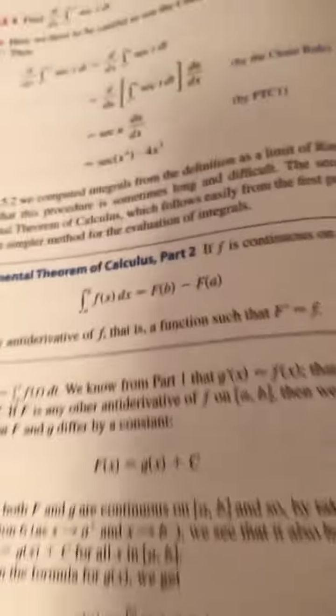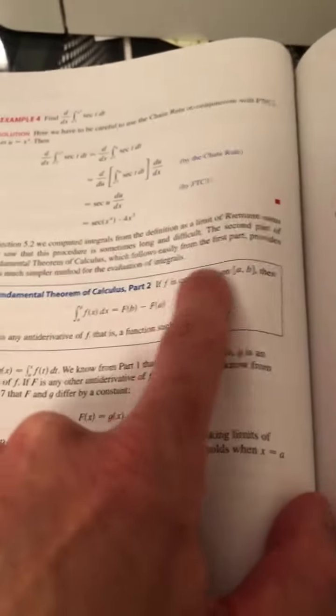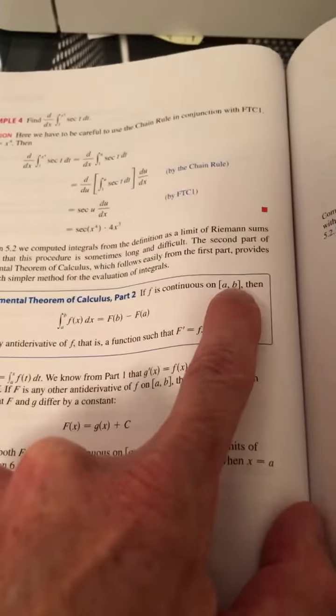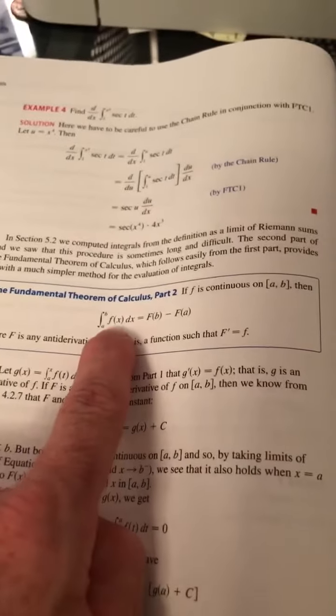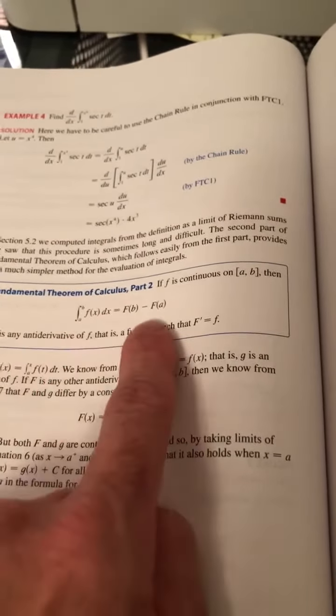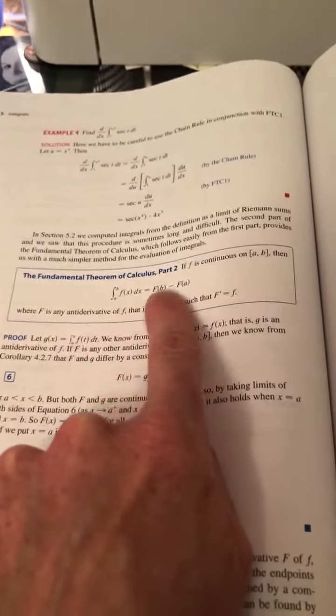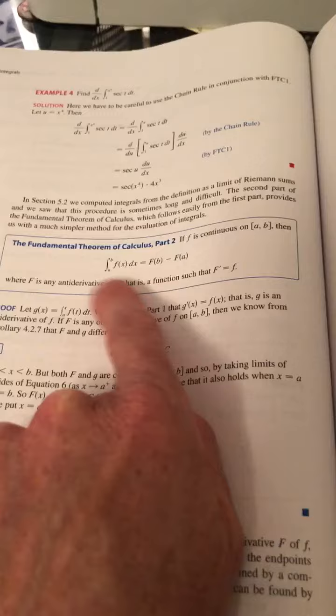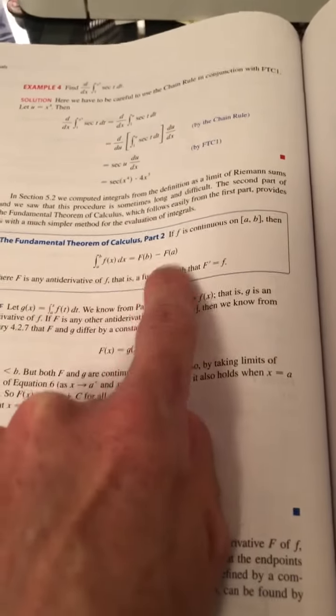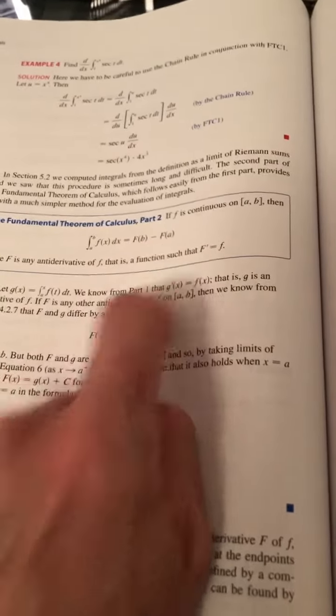If this is in your book, it's on page 396. If f is continuous on the interval from a to b, then the integral of f of x from a to b is an antiderivative of f evaluated at b minus an antiderivative of f evaluated at a.